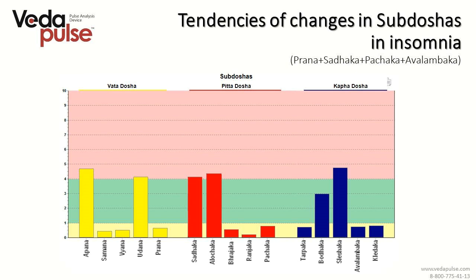The main cardio-intervalogram indicators in emptiness of yin followed by insomnia: you'd see tension of Prana Vata, tension of Sadhaka Pitta (the fire of mind), tension of Pachaka Pitta, and of course deficiency of Avalambaka Kapha.